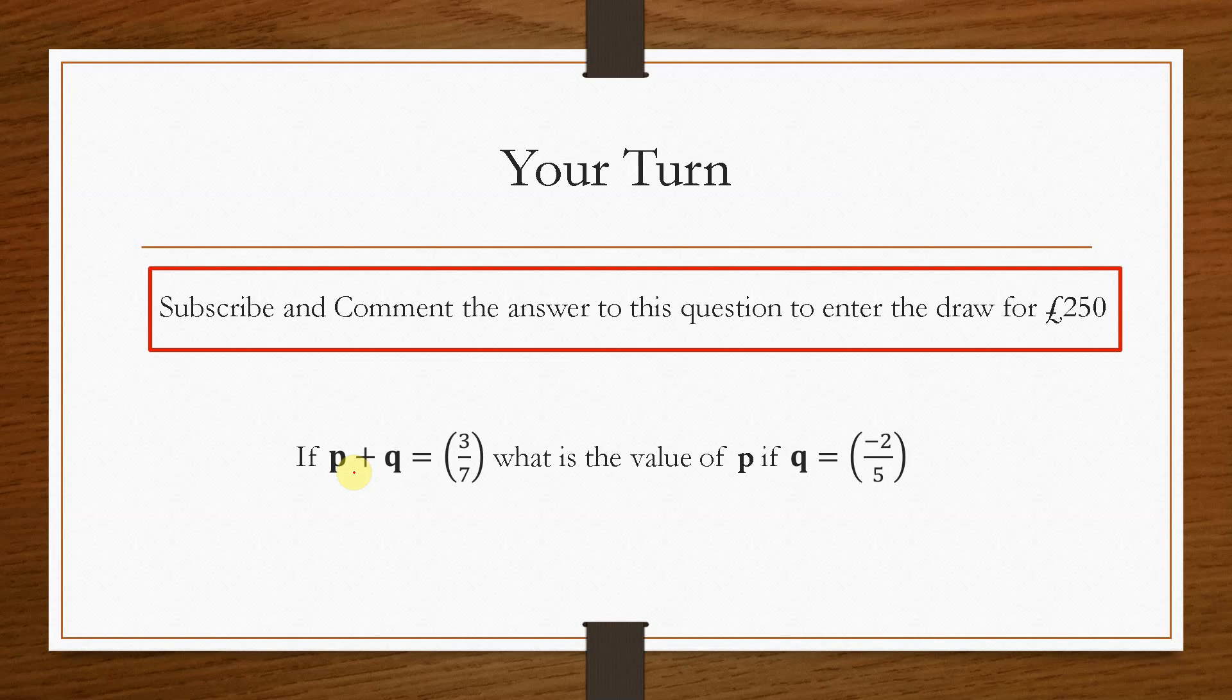Now it is your turn. In order to qualify for the £250 giveaway each month in 2021, all you have to do is subscribe to the channel and comment the correct answer to this question here. It says that we want to find the value of p if q is minus 2 and 5, and we know that p plus q is 3 over 7.